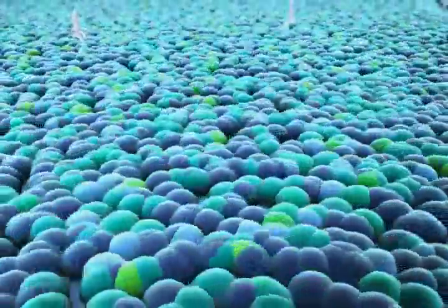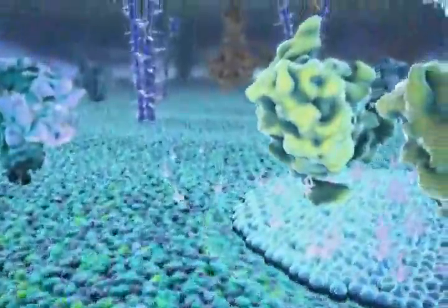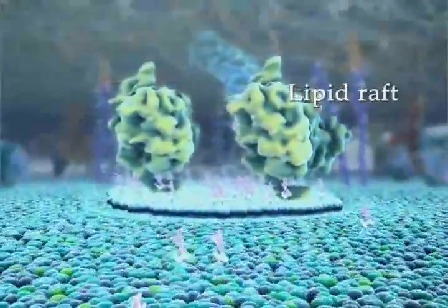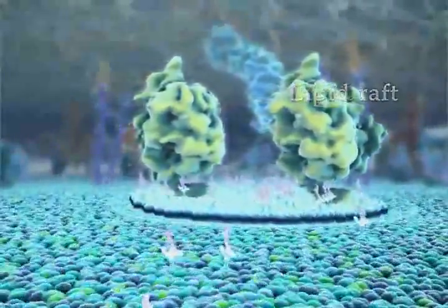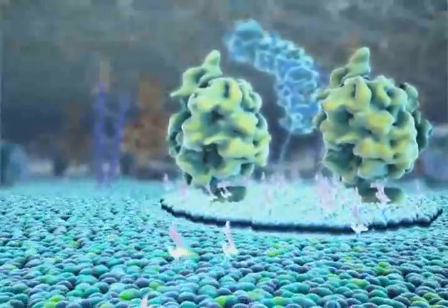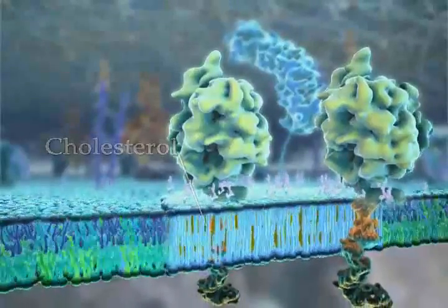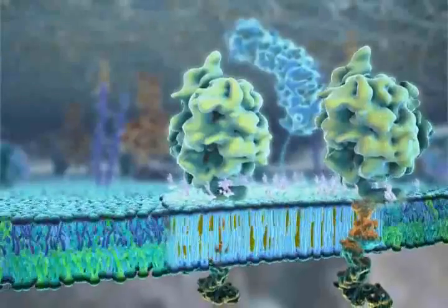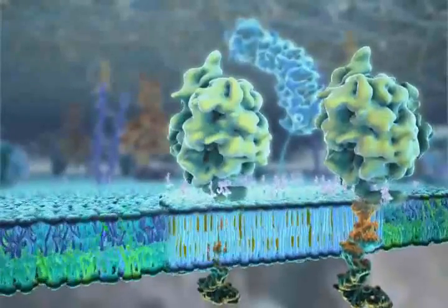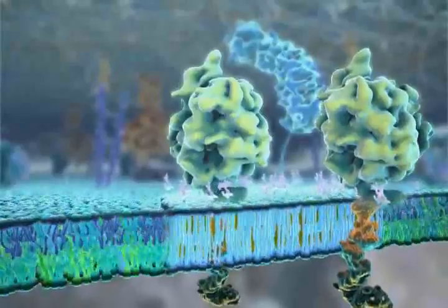The outer leaflet of the lipid bilayer is enriched in sphingolipids and phosphatidylcholine. Sphingolipid-rich rafts raised above the rest of the leaflet recruit specific membrane proteins. Rafts' rigidity is caused by the tight packing of cholesterol molecules against the straight sphingolipids hydrocarbon chains. Outside the rafts, kinks in unsaturated hydrocarbon chains and lower cholesterol concentration result in increased fluidity.